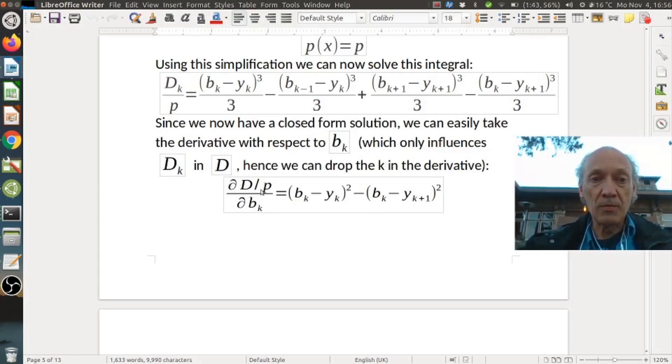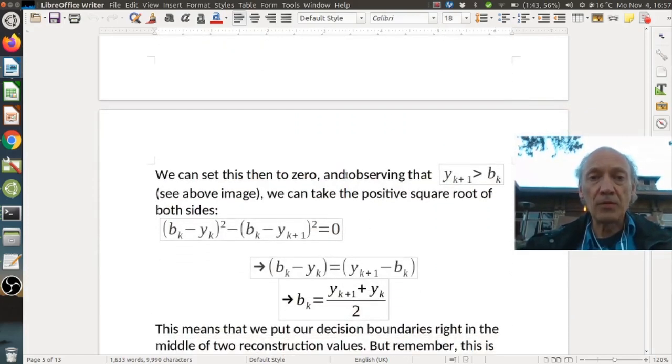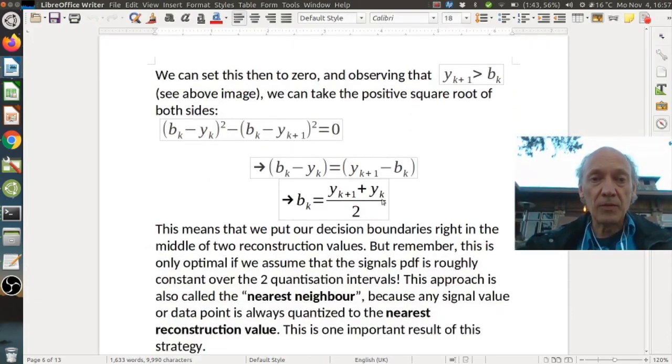So here we have this derivative. And basically all what's left from this expression here is those two terms where the b_k actually appears. So now we can set it to zero. And observe that y_{k+1} must be larger than the lower end of this interval b_k. And we can take the positive square root of both sides. So here we set it to zero. We have this quadratic form. We bring this to the other side. Then we take the square roots. And we have this equality here. And then we simply bring this y_k on the other side. And we get this result.